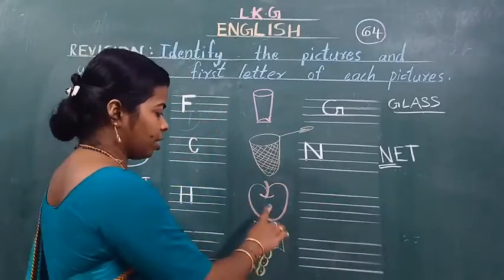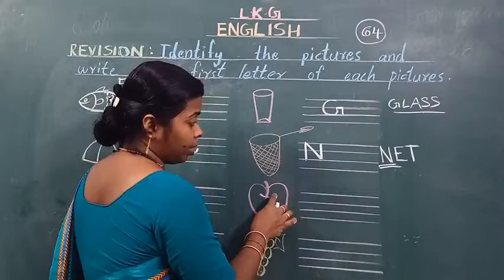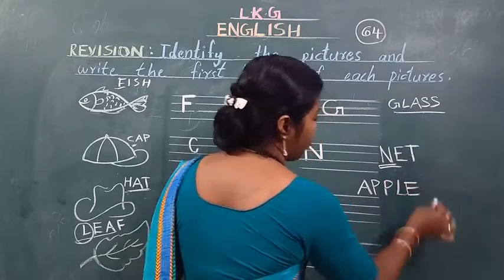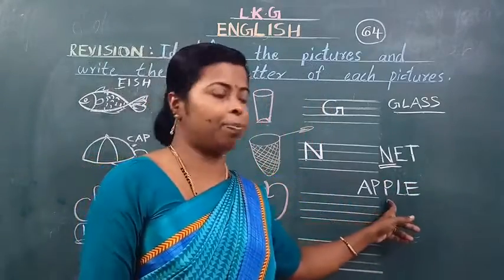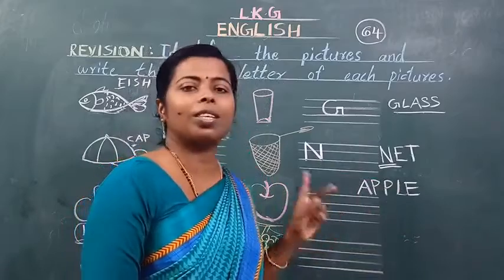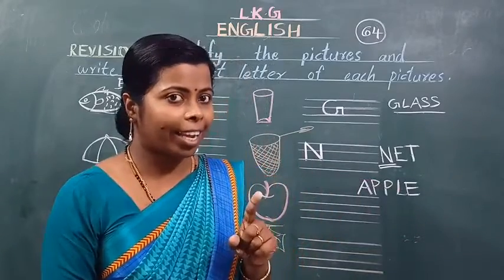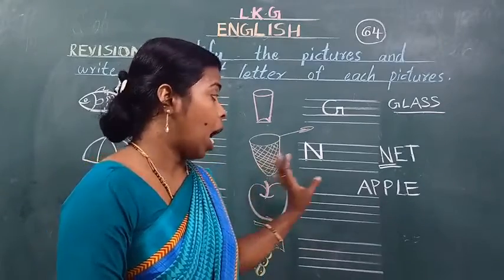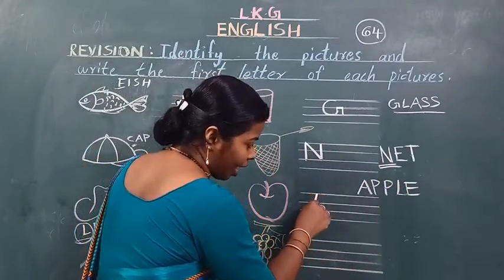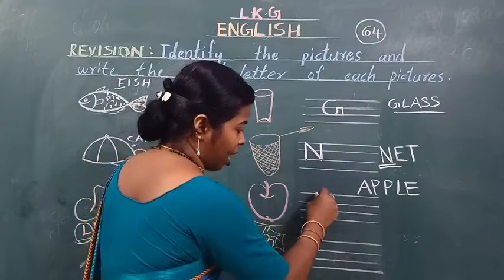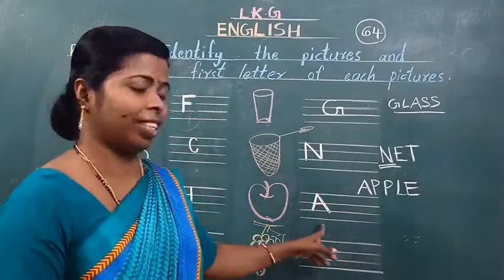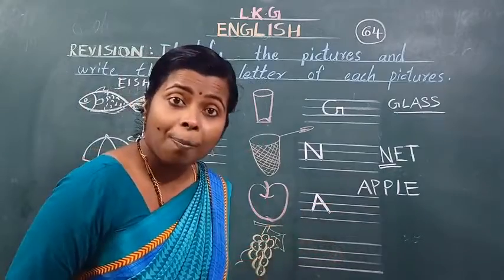And see the next picture. What is this? Ye apple hai. This is an apple. A-P-P-L-E apple. See the spelling of the word apple — A-P-P-L-E apple. Idhar haam koon sa letter likhenge? A likhenge. Kyun? Ye apple hai, apple ka pahla ashar A hai. Isse liye haam idhar A likhenge. Slanting line, again slanting line, and sleeping line. This is A — A for apple.